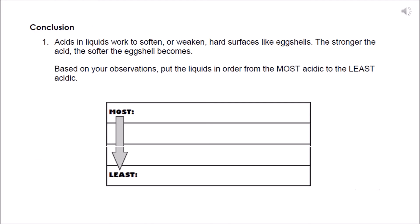For our conclusion after the experiment, we're going to write down some information. Number one. Acids in liquids work to soften or weaken hard surfaces like eggshells. The stronger the acid, the softer the eggshell becomes.